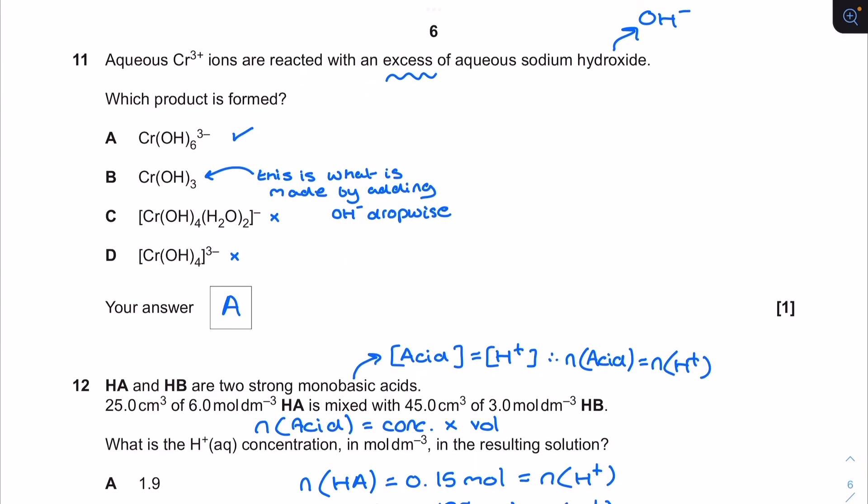For question 11, chromium 3 plus ions are reactive with an excess of aqueous sodium hydroxide. Which product is formed? These two aren't really anything that we study at A level. When an excess of aqueous sodium hydroxide is used we do make this top structure here. Often written as a complex ion with square brackets on either side of the formula with the 3 minus on the outside. This chromium hydroxide, the chromium 3 hydroxide, that's actually what would be made if it was dropwise instead of excess and it would be a precipitate instead.